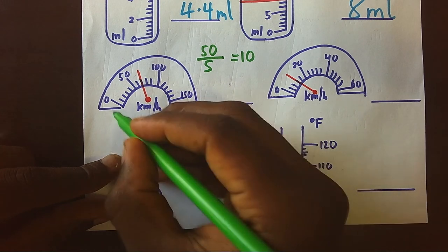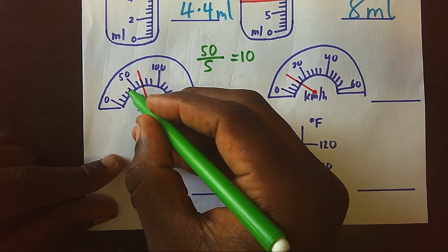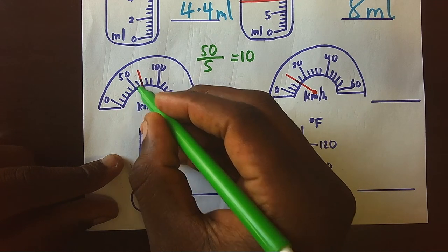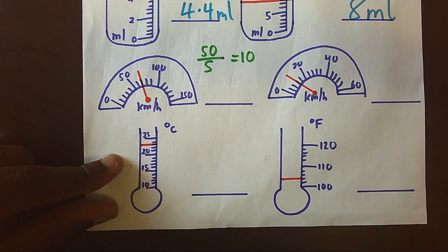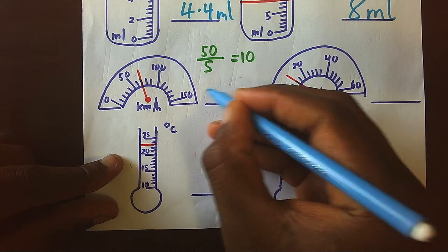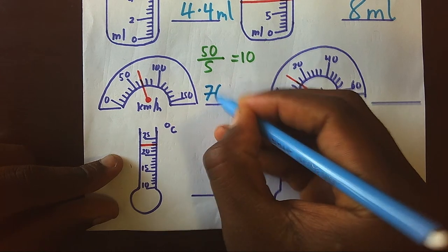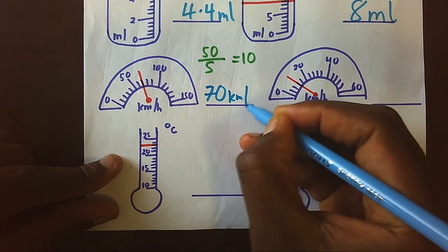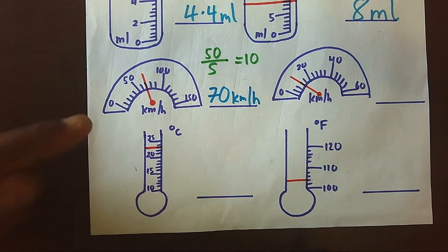That is 10, 20, 30, 40, 50, 60, 70, meaning our reading is 70 kilometers per hour.